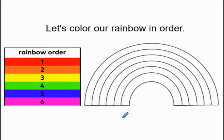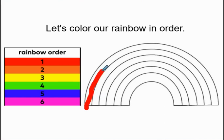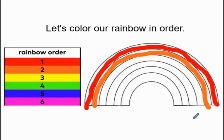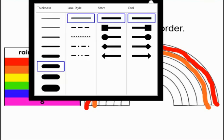Let's color our rainbow in order. To the left I have a chart of all the colors of the rainbow in order from first, second, third, fourth, fifth, and sixth. What is the first color that we need? If you said red, you are correct — red is the first color of the rainbow. What is the next color, the second color? If you said orange, you are correct — orange is the second color that comes after red. What is the third color of the rainbow? If you said yellow, you are right — yellow is the third color of the rainbow.